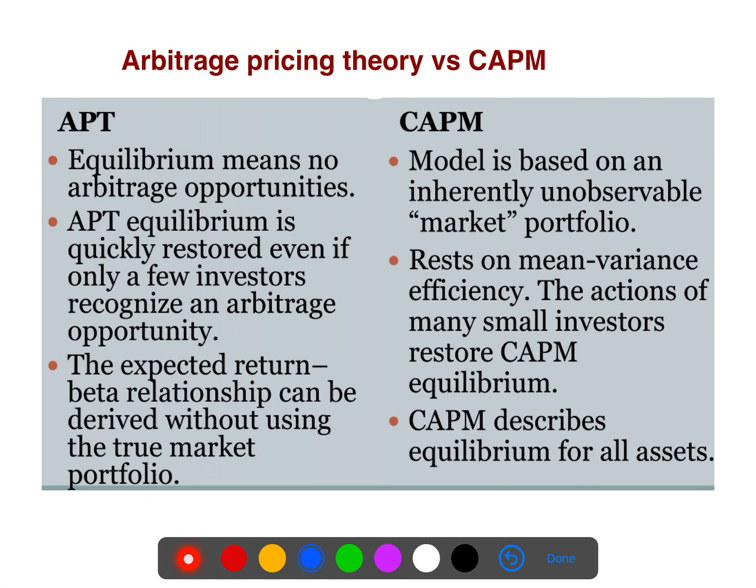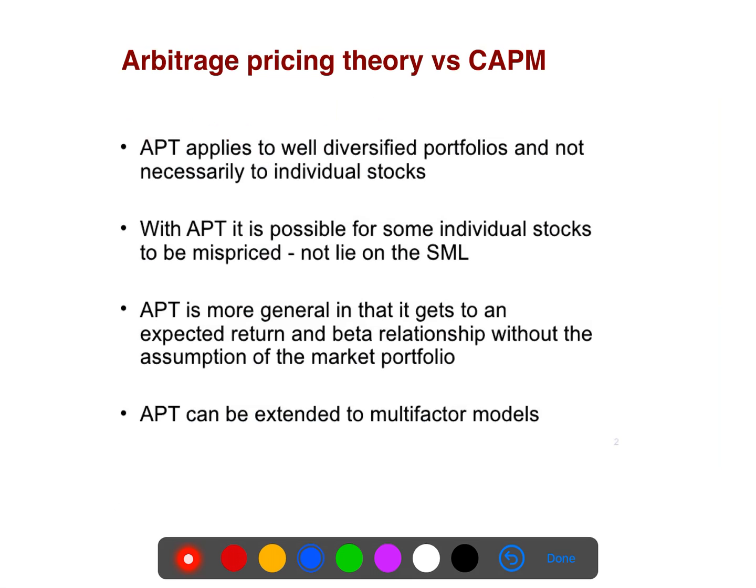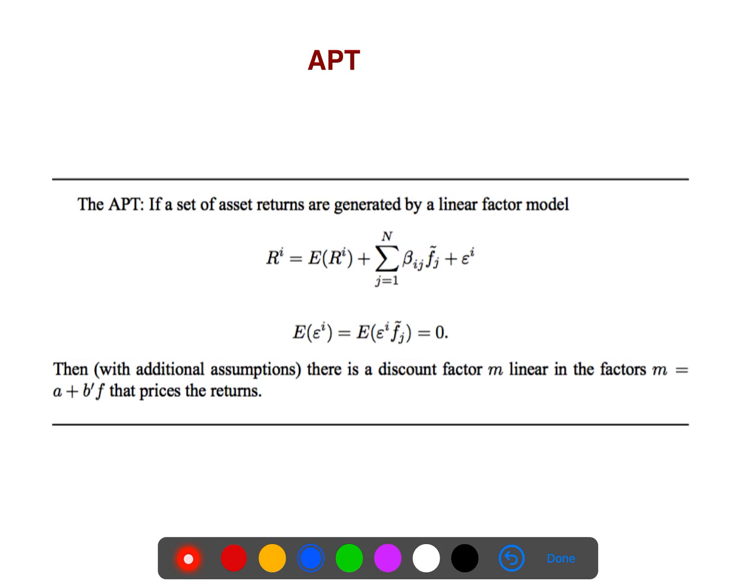The difference between arbitrage pricing theory and CAPM is that CAPM is based on an inherently unobservable market portfolio. CAPM describes equilibrium for all assets, but for APT, you can define it for a portfolio as well. For example, you compare it to your S&P 500. Arbitrage pricing theory versus CAPM in different contexts - you have different comparisons. For example, APT can be extended to multi-factor models. When APT is possible, it's possible for some individual stocks to be mispriced, not to lie on the security market line. For APT, arbitrage pricing theory, you can define your return in terms of some factors.